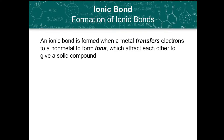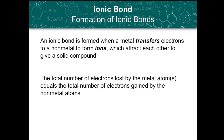As we have discussed in the previous video, ionic bonds are formed when there is a transfer of electrons from a metal to a non-metal to form ions. The total number of electrons lost by the metal atoms will be equal to the total number of electrons gained by the non-metal atoms.